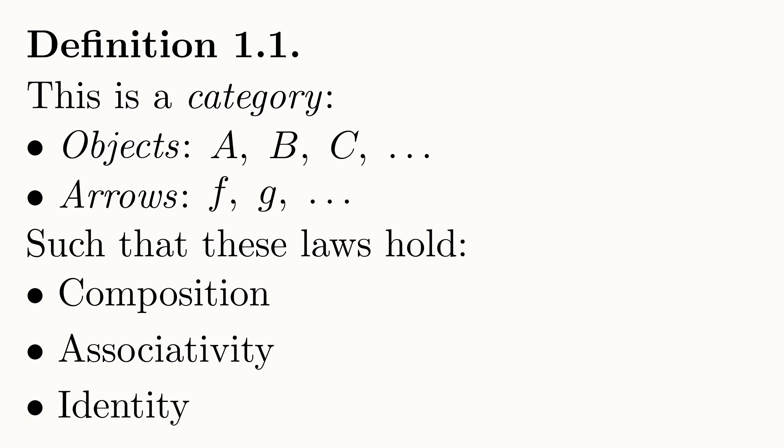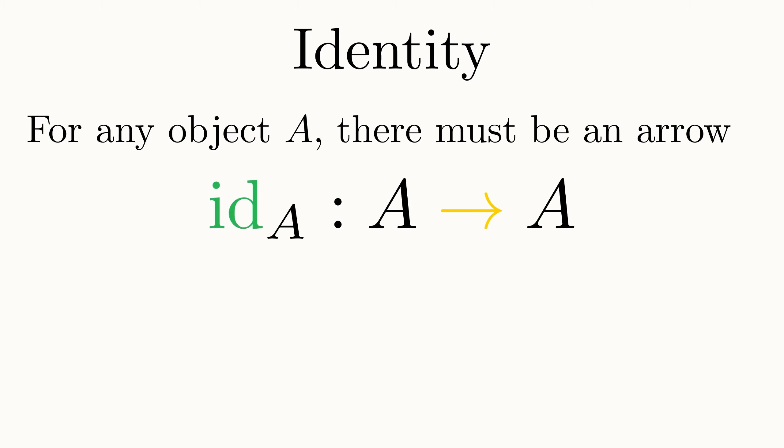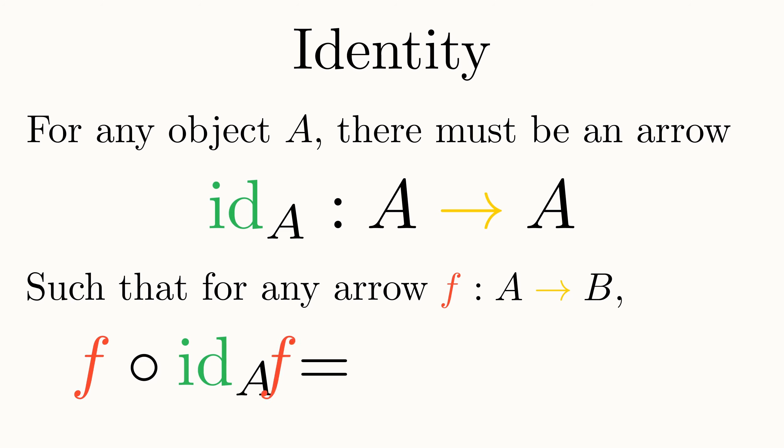Last up, identity. We require that for any object A in our category, there must be an arrow id with its domain and codomain being A. This arrow is called the identity arrow of A. This identity arrow must be the unit of composition, which means that for any arrow f from A to B, it must be the case that f follows the identity arrow of A is f, and the identity arrow of B follows f is also f.